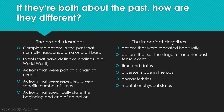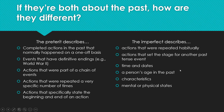We also use the imperfect for time and dates, a person's age in the past — similar to 'cuando era niño' or 'cuando tenía catorce años' (when I was 14 years old). We also use it for characteristics and mental or physical states, similar to the differences between ser and estar, where one is more permanent or stable and the other describes things that can change more often.